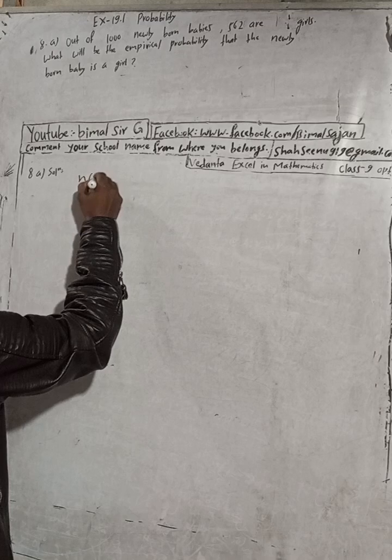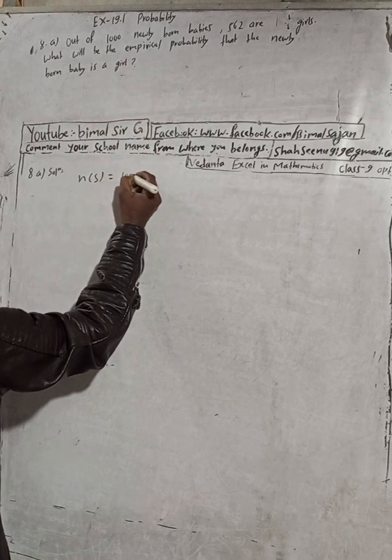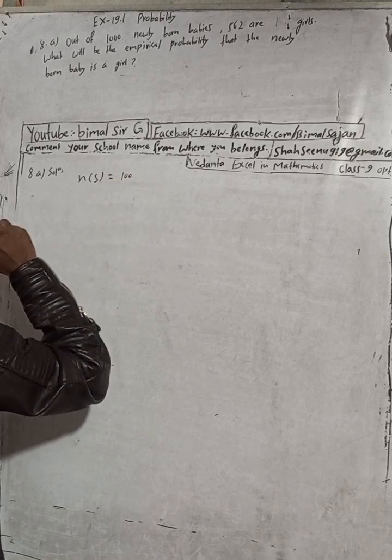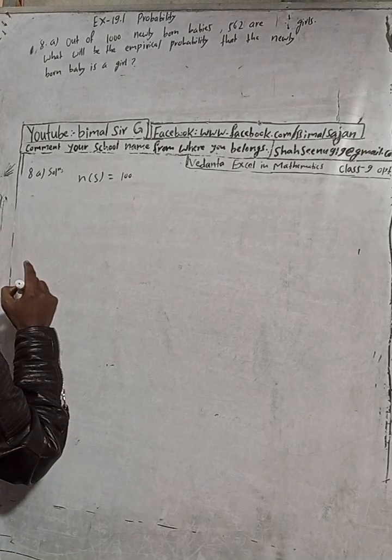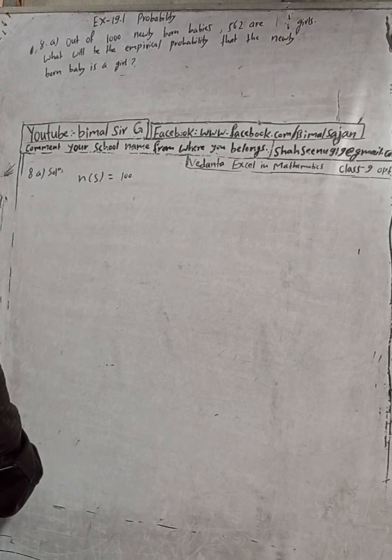Here the sample, n(S), is 1000 newly born babies, and 562 are girls. The question is to find the empirical probability that the newly born baby is a girl.